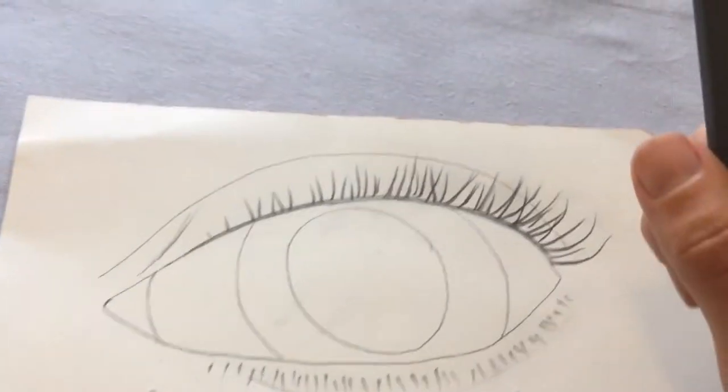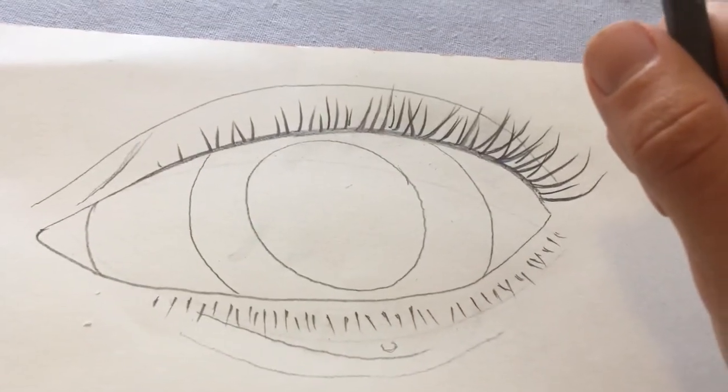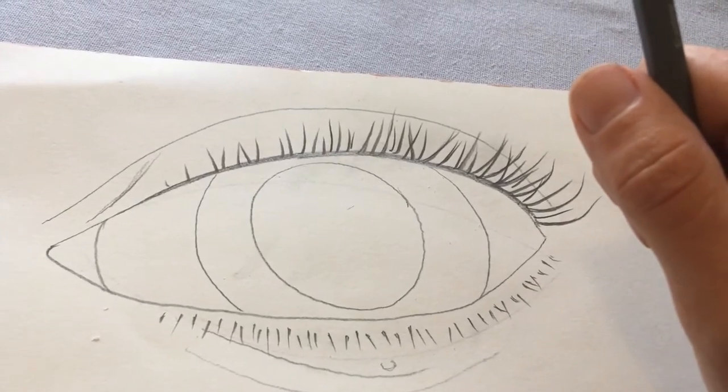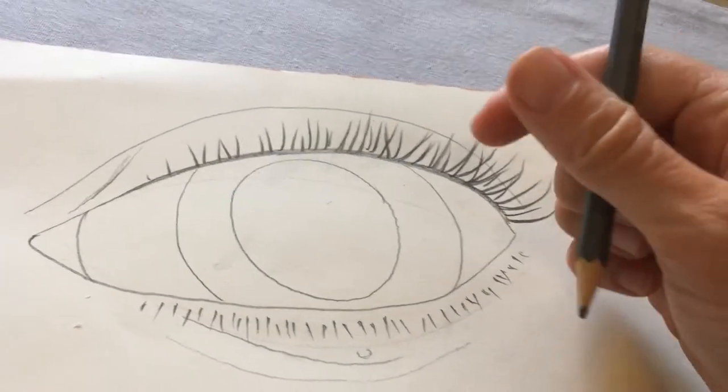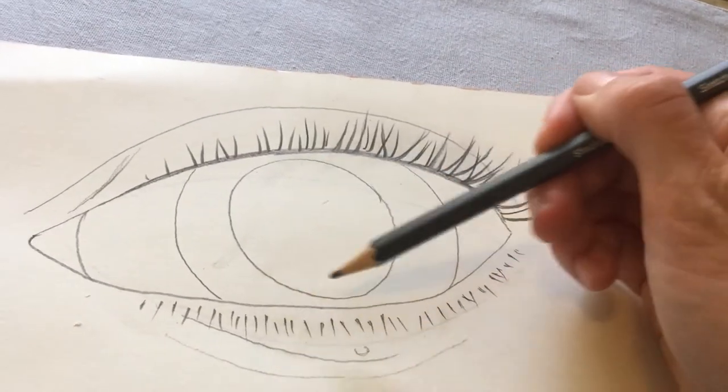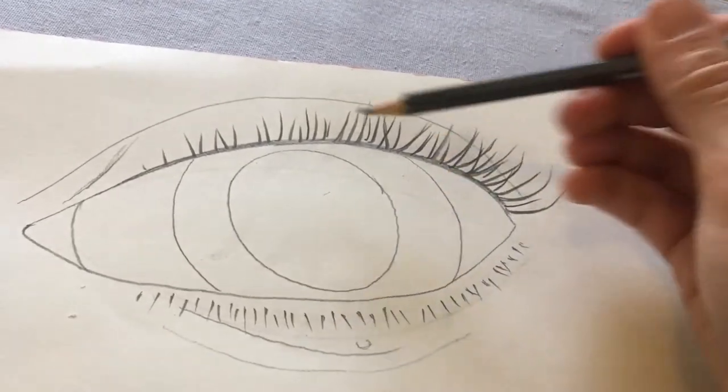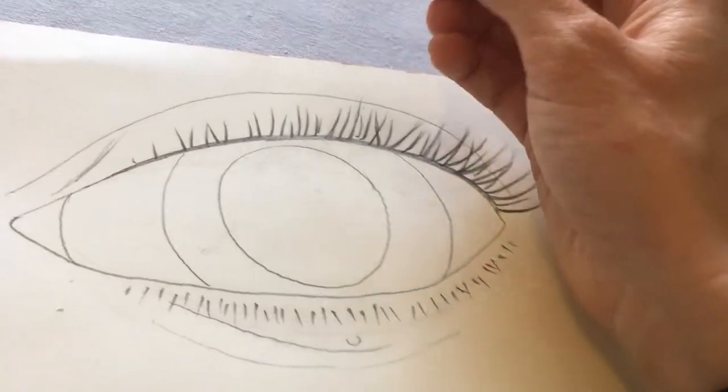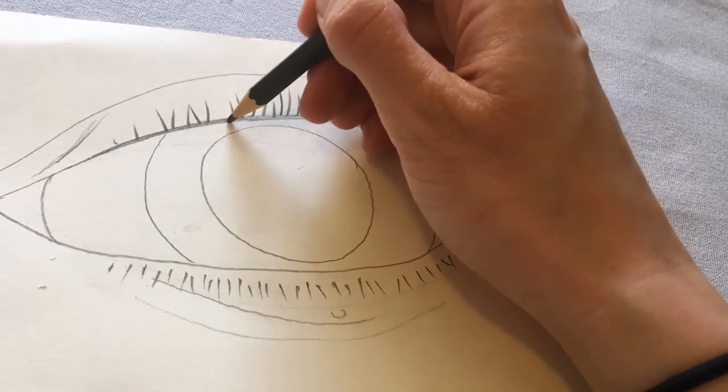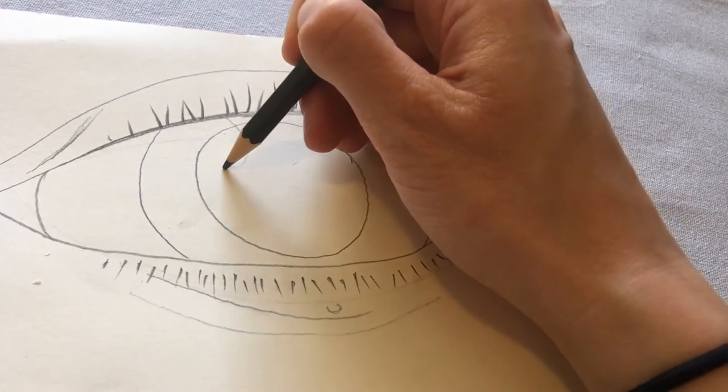Now what I want you to do is look really closely at the way the light is reflecting on your eyeball. Because it might not be that your pupil looks completely black and your irises all look the same. On mine I can see that there's a little spot of bright light coming in here.